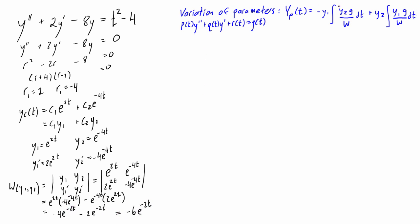Now we have everything needed to fill out the variation of parameters expression. To keep track: y1 = e^(2t), y2 = e^(-4t), g(t) is the original right hand side which is t² - 4, and W, the Wronskian of y1 and y2, is -6e^(-2t).